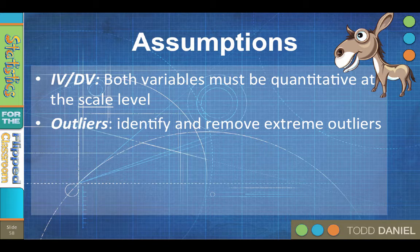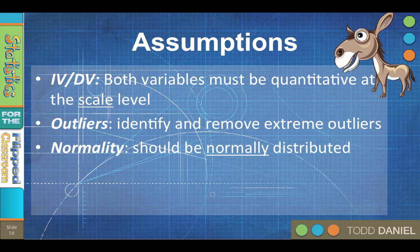You should not have any extreme outliers. Check for outliers using the Explore command in SPSS. Delete or Windsorize severe outliers so that the outlier is the same as the next highest non-outlier value in the data set. Both variables should be normally distributed. The actual assumption of correlation is bivariate normality; however, bivariate normality is rather difficult to assess. So instead, use a Shapiro-Wilk test for univariate normality on both variables.